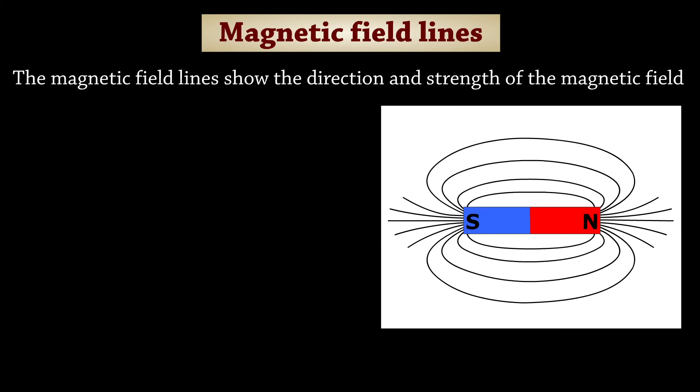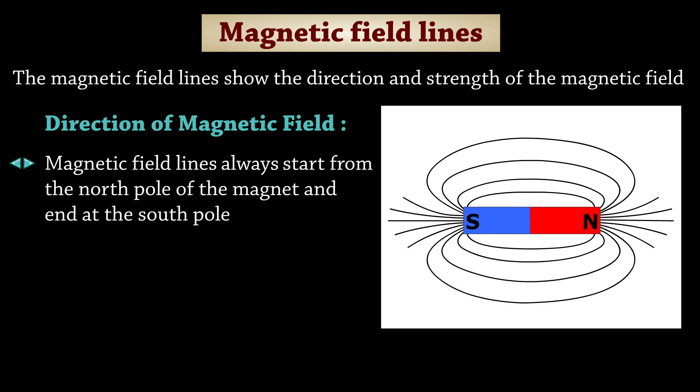The magnetic field lines show the direction and strength of the magnetic field. Magnetic field lines always start from the north pole of the magnet and end at the south pole.